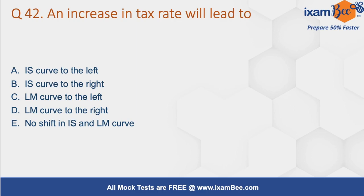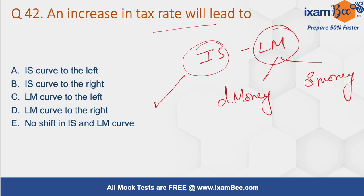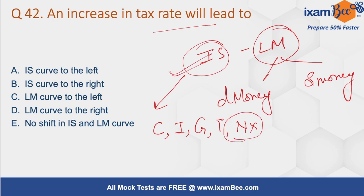Question number 42: An increase in tax will lead to what? We have discussed this type of question in the previous video — what causes a shift in the IS and LM curves. A change in demand for money or supply of money leads to a shift in the LM curve. For the IS curve, changes in consumption, investment, government expenditure, taxation, and net exports cause the shift — not the LM curve.